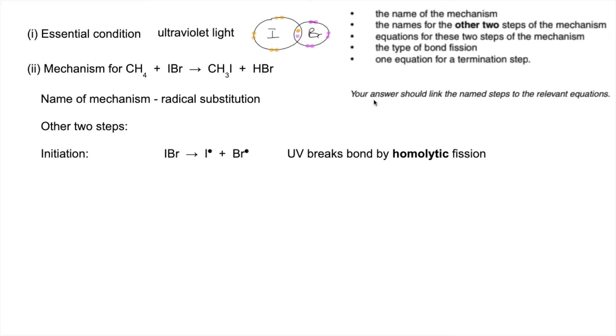And I'm putting in here the relevant equations next to each named step. So the IBr molecule is broken by the UV and you create two radicals or three radicals, an I radical and a Br radical, and I'm covering that bullet point there. The type of bond fission is homolytic fission.